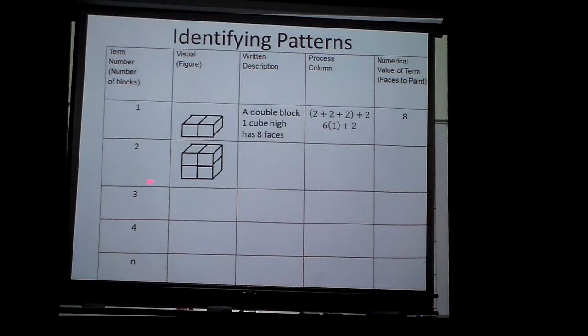So now if I make it two cubes double blocked, I'll have 14 faces. Think about it. One, two, three, four. Then I have five, six, seven, eight on the back, nine, ten right there, eleven, twelve on the sides. Then the plus two there, thirteen, fourteen.